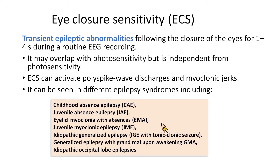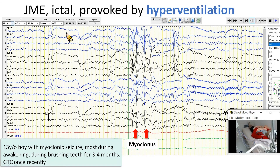Eye closure sensitivity can be seen in different epilepsy syndromes, including childhood absence epilepsy, juvenile absence epilepsy, eyelid myoclonia with absence, and others. The next slide shows an ictal attack provoked by hyperventilation.